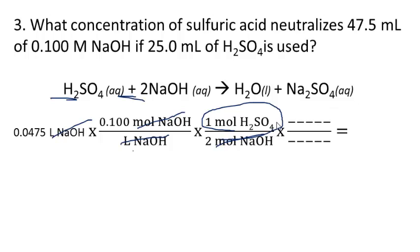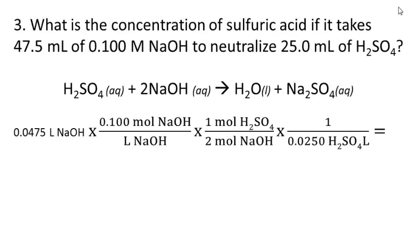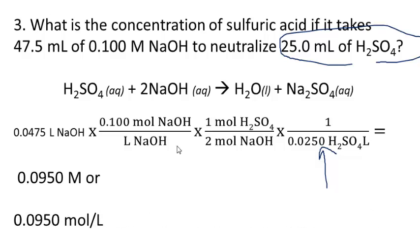To find molarity, we just need to put moles over liters. So all we need to do is divide by this volume right here of our sulfuric acid. So the way this last step should look is you just put 1 over the volume of the sulfuric acid. So we've got 25 milliliters of sulfuric acid. We just change that to liters and put that right there. So it's 0.0475 times 0.1 divided by 2 times or divided by 0.025. And that would give us 0.0950 M, or you could also write it as 0.0950 moles per liter.